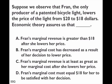Option C says Fran's marginal revenue is at least as great as her marginal cost after she lowers the price. That could be true, because Fran produces where marginal revenue equals marginal cost. So if she lowered the price from $20 to $18, marginal cost after the price change has to be at least as great as marginal revenue. Option D says marginal cost must equal $18, which is wrong because marginal revenue must be less than $18, so marginal cost must also be less than $18. Clearly the answer is C.